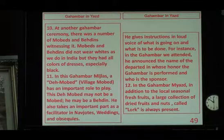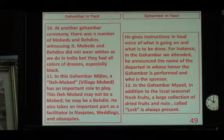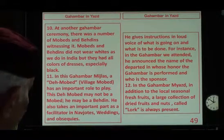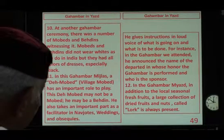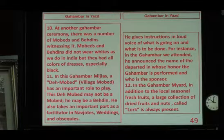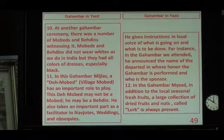He has an important role to play. The Bay Mohammed was not necessarily a Mohammed — he may even be a bedin. But he is the one who is kind of a facilitator even in Nausari's weddings and obsequies. He gives instructions in a loud voice of what to be done. For example, he started the Ghambar. Before that, he announced the name of the departed person in whose order the Ghambar is done.